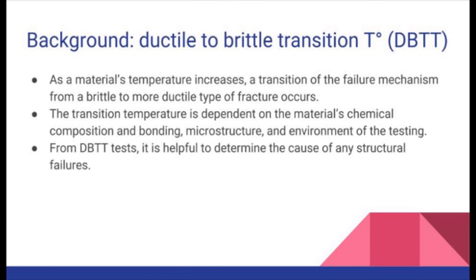Ductile to brittle transition temperature, also known as DBTT: as a material's temperature increases, a transition of the failure mechanism from a brittle to a more ductile type of fracture occurs. The transition temperature is dependent on the material's chemical composition and bonding, microstructure, and environment of the testing. From DBTT tests, it is helpful to determine the cause of any structural failures.